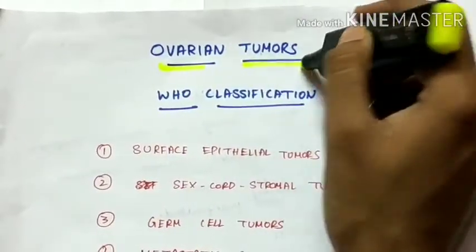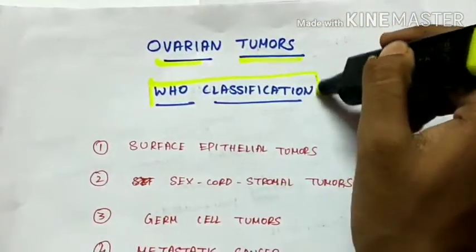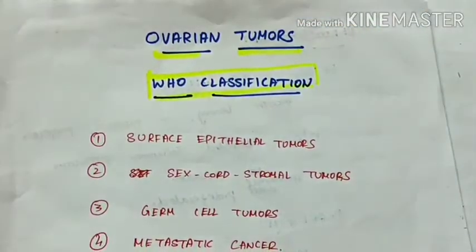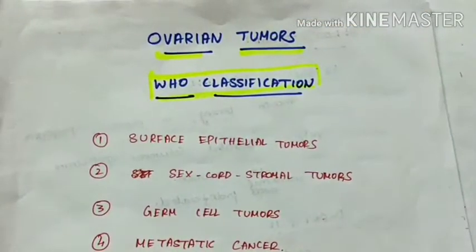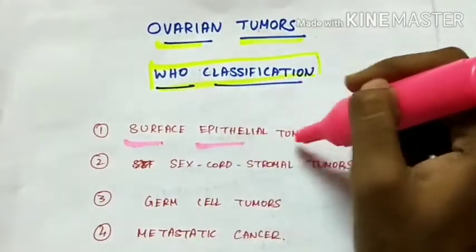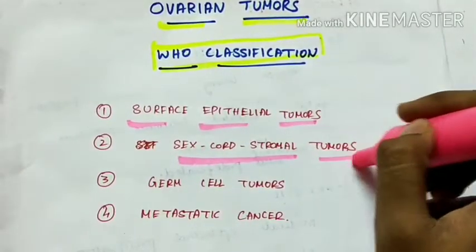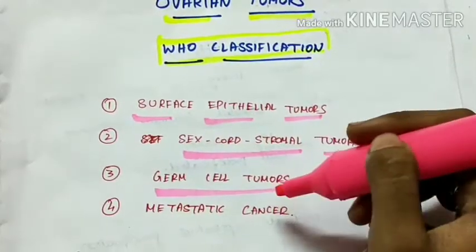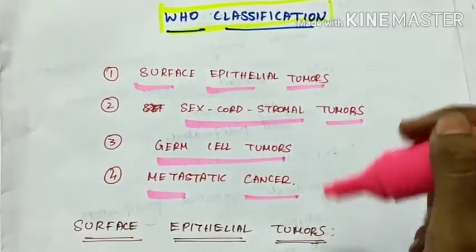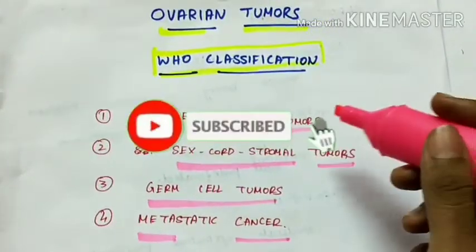Ovarian tumors. WHO classification of ovarian tumors. There are four types: first is surface epithelial tumors, sex cord stromal tumors, germ cell tumors, and metastatic cancer. These are the four classifications of ovarian tumors.